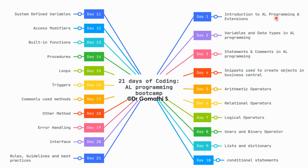The very first day is introduction to AL programming and extensions — that is what we'll be learning today. Day two is variables and data types in AL programming. Day three is statements and comments. Day four is snippets used to create objects in Business Central. Day five is arithmetic operators, day six is relational operators, day seven is logical operators, and day eight is unary and binary operators.